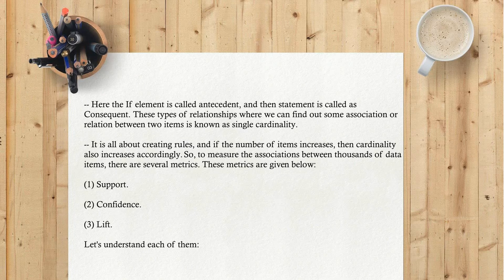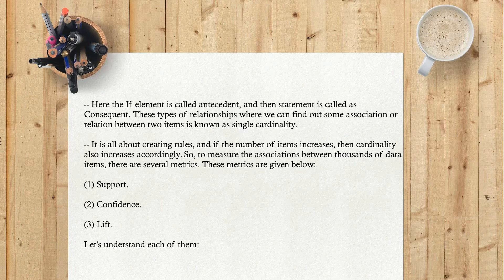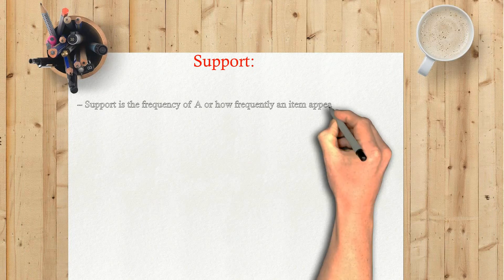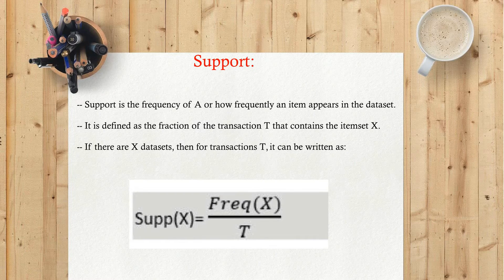So to measure the associations between thousands of data items, there are several metrics. These metrics are: one, support; two, confidence; three, lift. Let's understand each of them.